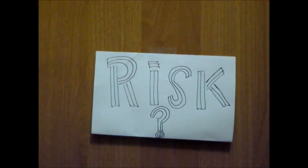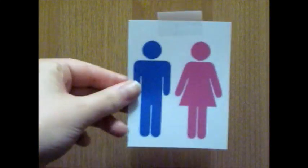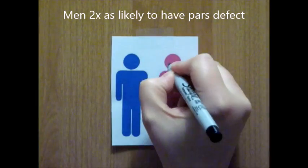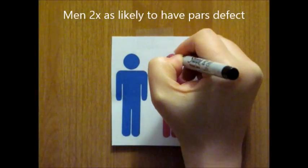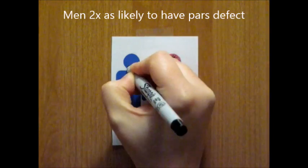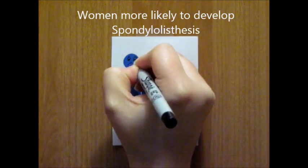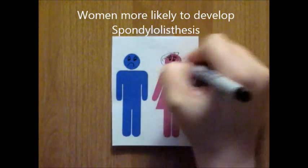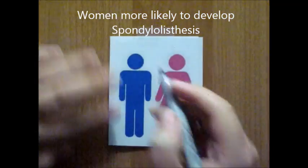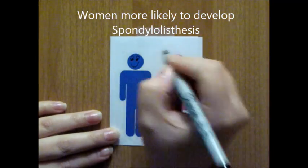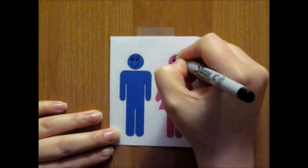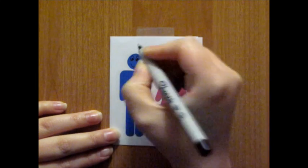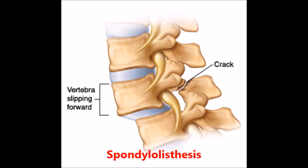Now, who is most at risk? Men are twice as likely to have a pars defect than women, although women have a greater likelihood of progression to spondylolisthesis, which is a related but independent condition — that is, when one vertebra slips over the next one.